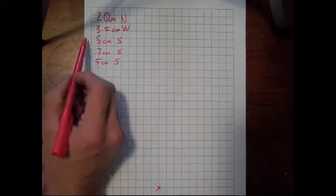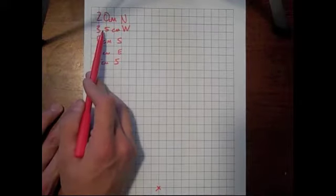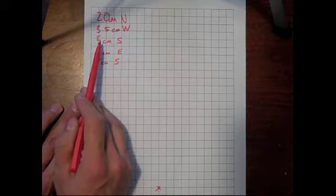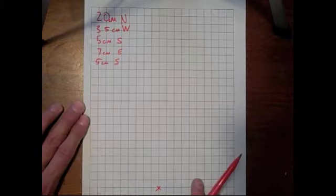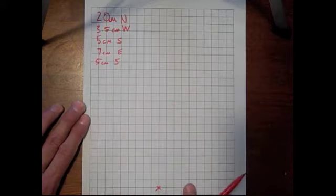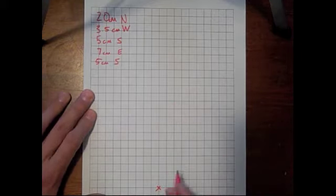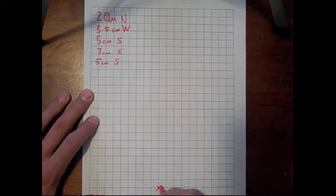All right, we're going to add these three vectors: 20 centimeters north, 3.5 centimeters west, 5 centimeters south, 7 centimeters east, and then again 5 centimeters south. We're going to do it graphically on the graph paper, which means we're going to draw out the vectors and add them. The way we do that is by adding them tip to tail.